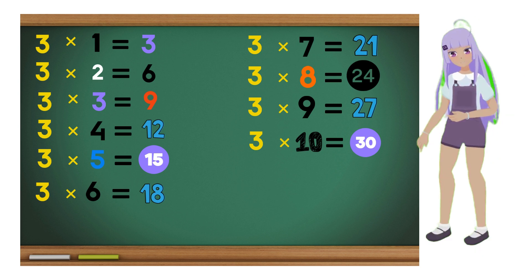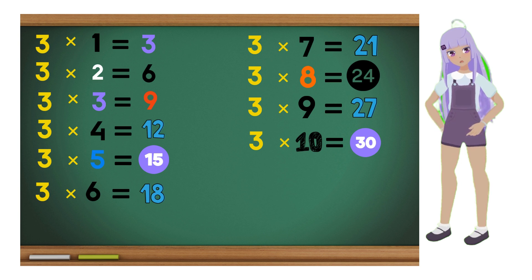Remember, when we multiply by 3, we add the number to itself. It's like having double the fun! Multiplication helps us quickly find out how many things we have in all. It's like magic!